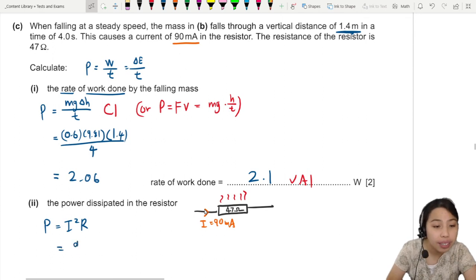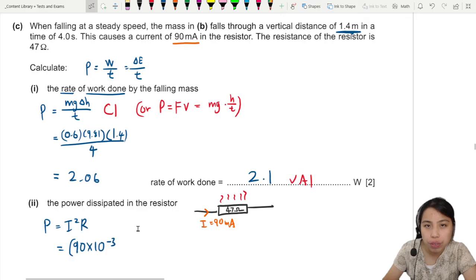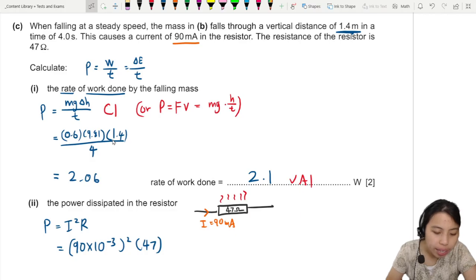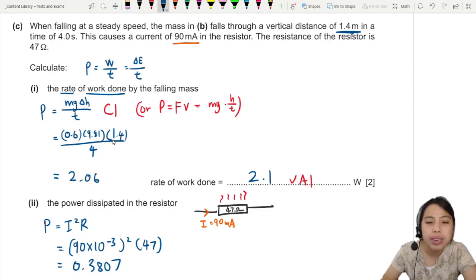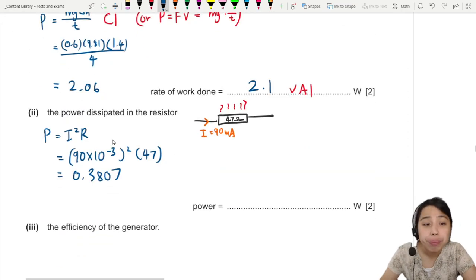So I'm going to go and write 90 milliamps. Milli is 10 to the negative 3 right here, squared, then 47 ohm. This will give me a value of 0.3807 as my power dissipated. So that's right here, 0.38.